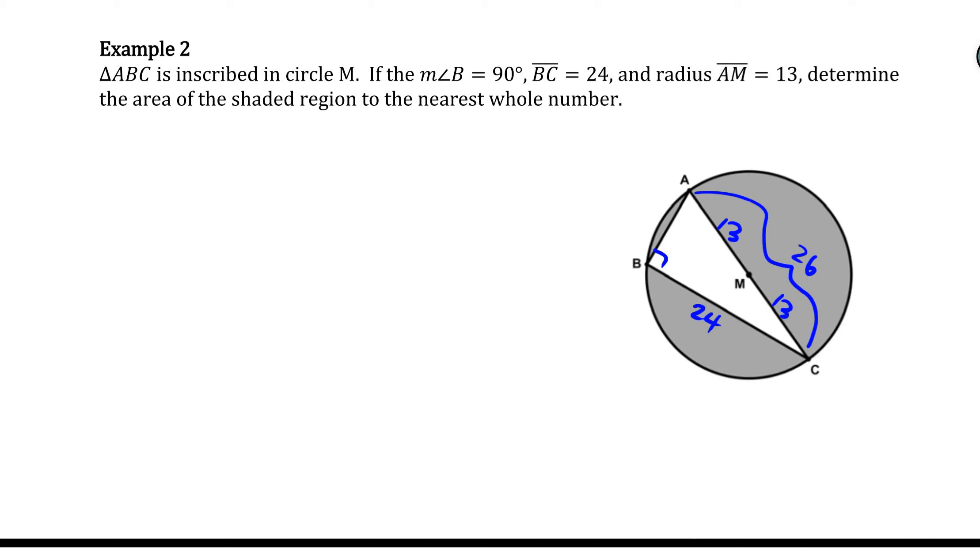So to find the area of the shaded region, my plan is going to be to subtract the area of the circle minus the area of the triangle. I know to do it in that order because the circle is bigger than the triangle. So to find the area of the circle, I'm going to do πr². The radius was 13. They kind of told us that. So I have π times 13 squared, where the area of the circle is equal to 169π. Again, I'm not going to evaluate that because I don't want to round it. So I'm just going to leave it in terms of π until I find my answer. Then I can round my answer.